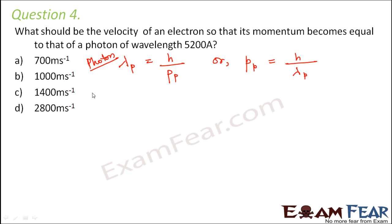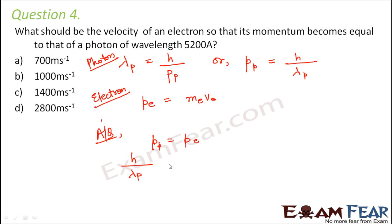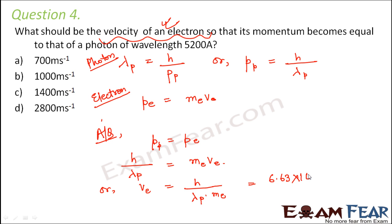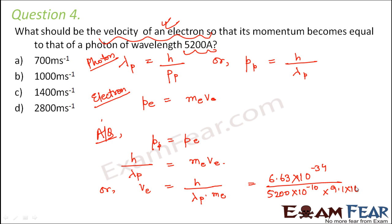The momentum of the electron equals mass of electron times velocity of electron. Since momentum of photon equals momentum of electron, h by lambda p equals m_e times v_e. Therefore velocity of electron equals h divided by lambda_p times m_e, which is 6.63 into 10 to the power minus 34 divided by 5200 into 10 to the power minus 10 meters times 9.1 into 10 to the power minus 31 kg. This gives 1400 meters per second. The correct option is C.